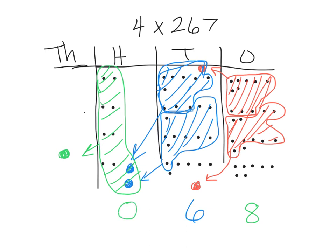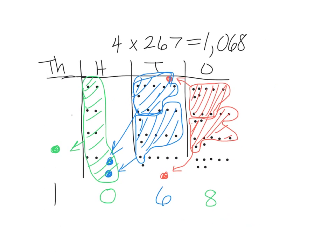So what am I left with? I am left with zero hundreds and I'm left with one thousand. So my final answer is one thousand sixty-eight. Now remember, this is just using the number disks to model what's going on with this multiplication.